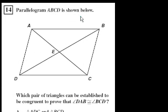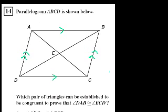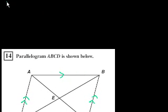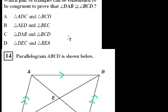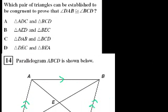Parallelogram ABCD is shown below. That tells us that the opposite sides are parallel — that side is parallel to that, and this is parallel to that. And they say which pair of triangles can be established to be congruent to prove that angle DAB is congruent to angle BCD.